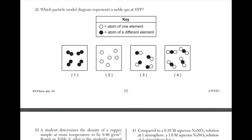Which particle model diagram represents a noble gas at STP? The answer is choice 2 because it shows single elements. Answers 3 and 4 represent compounds, and answer 1 shows diatomic elements.